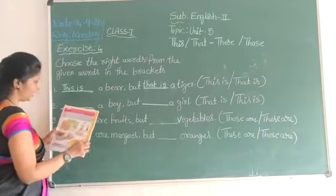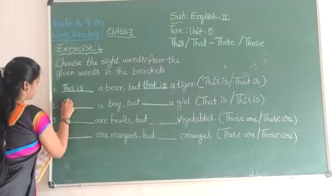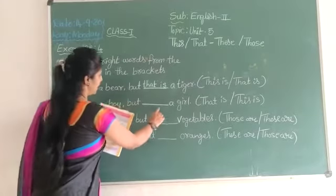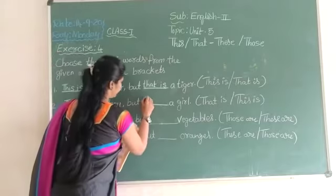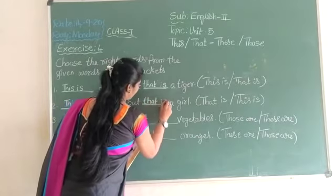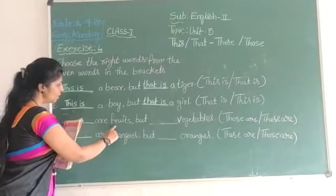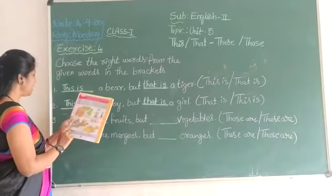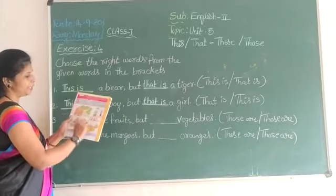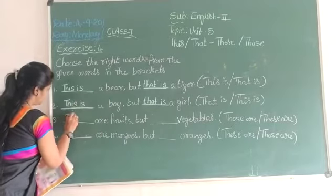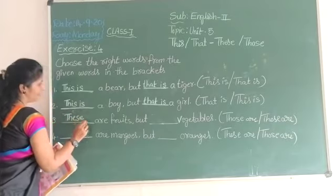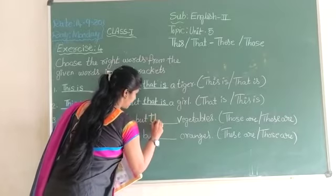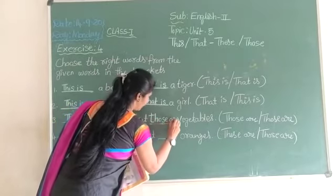Blank, a boy — the boy is here, so this is the boy. T-H-I-S. This is a boy, but blank, a girl — that is a girl. Blank, fruits, but blank, a vegetable. These are fruits, but those are vegetables. Those are vegetables.